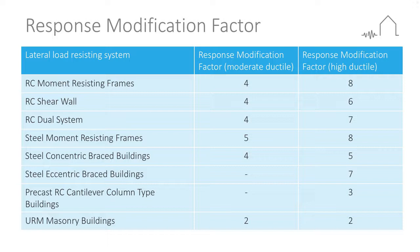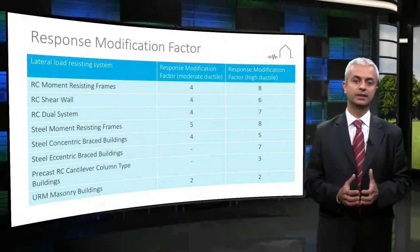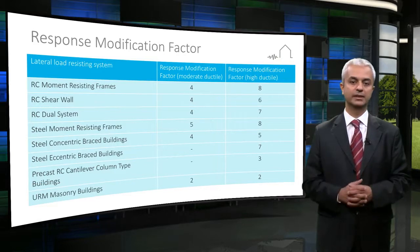In contrast, a masonry wall system will have a lower response modification factor due to its non-ductile material properties and very limited number of plastic hinges.